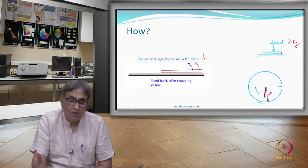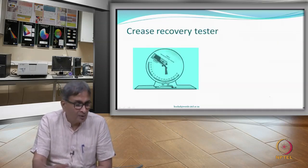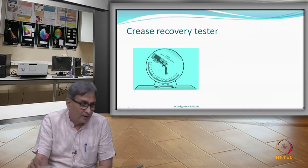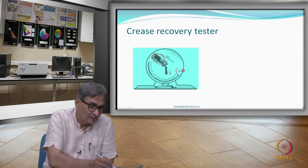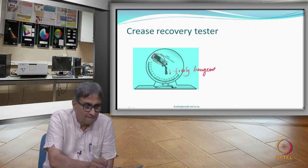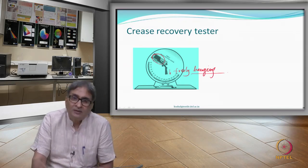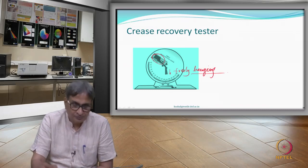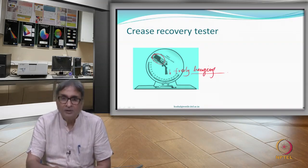After one minute, you note how much recovery has taken place — that is your crease recovery angle in one direction. Then you measure the other direction and add them up for the total crease recovery angle. The equipment has a clamp area and the freely hanging edge of the fabric. So whenever you do a treatment, you can determine whether you have improved the crease recovery performance or not.